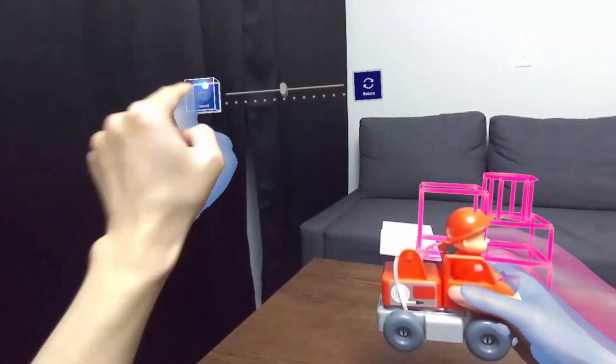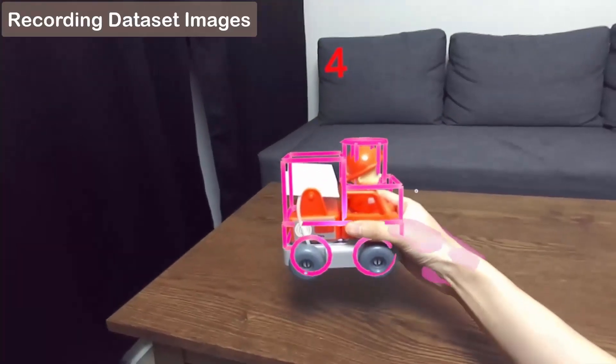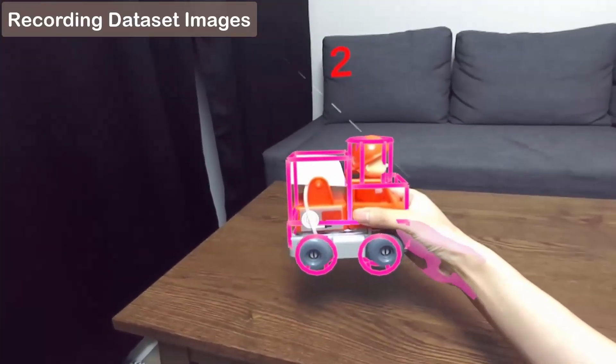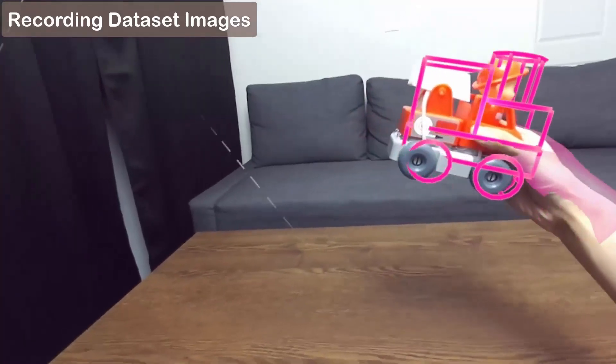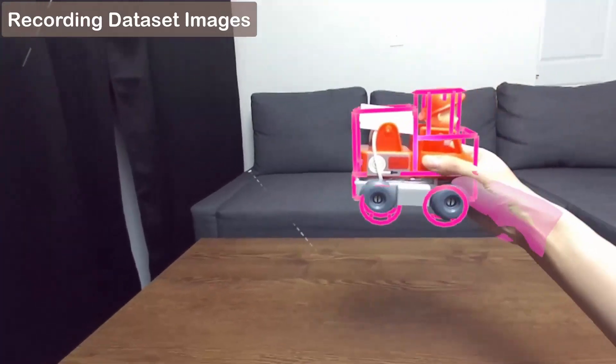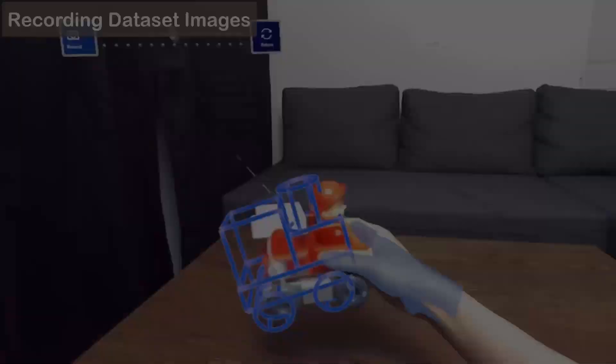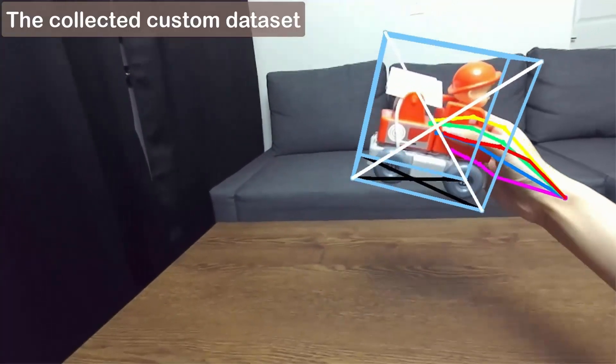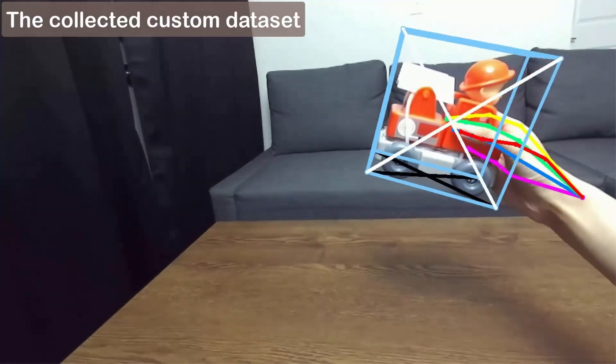The system then captures the user's first-person view as the dataset images when the user manipulates the physical object using the in-situ AR animation of the previous interaction as spatial reference. After the back-end post-processing, a custom dataset is created using Arnotate.